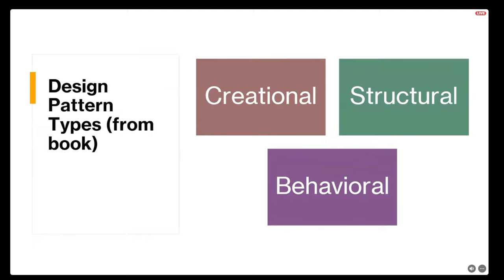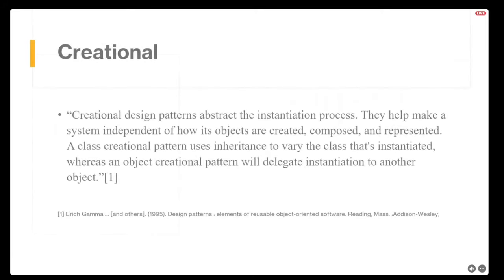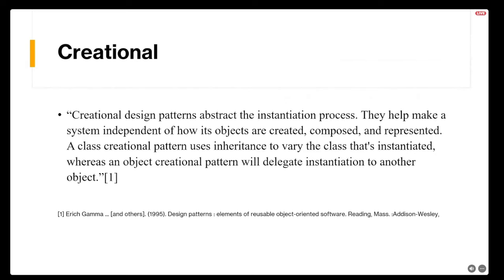The book discusses three particular types of design patterns, and we'll discuss them tonight, focusing mostly on creational and structural patterns. A creational pattern — taken right from the book — abstracts the instantiation process and helps make a system independent of how its objects are created, composed, and represented. A class creational pattern uses inheritance to vary the class that's instantiated, whereas an object creational pattern delegates instantiation to another object. Think of creational patterns as alternatives to a simple constructor system.